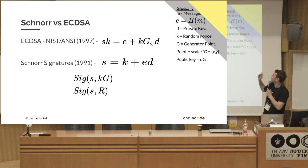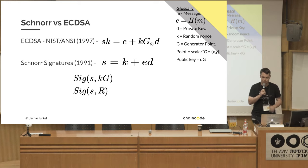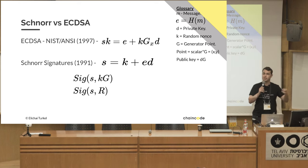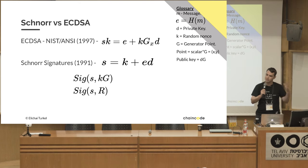D is the private key, K is some random nonce, and G is the generator point. Jimmy talked about this this morning, but I'll recap.